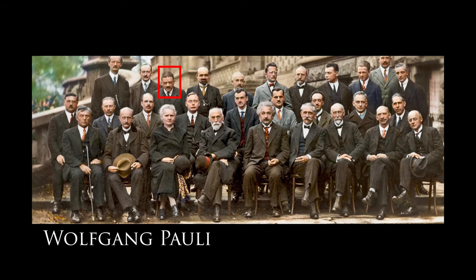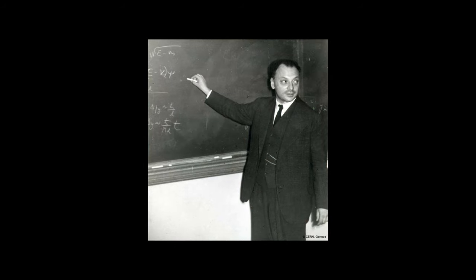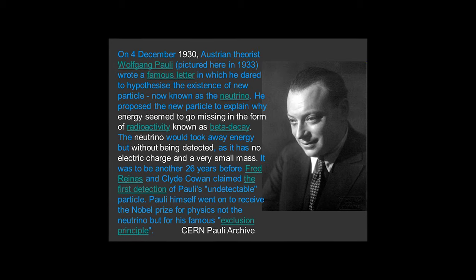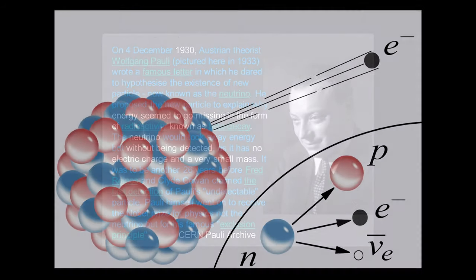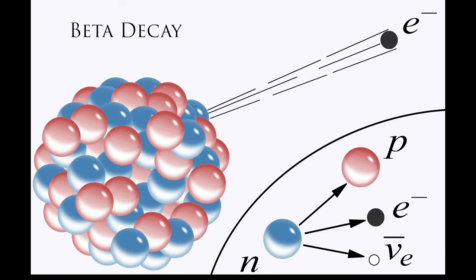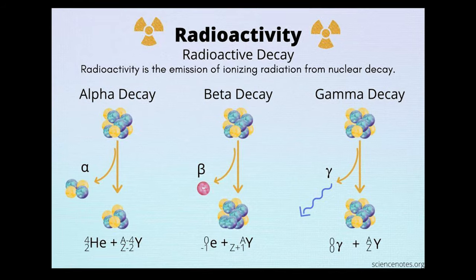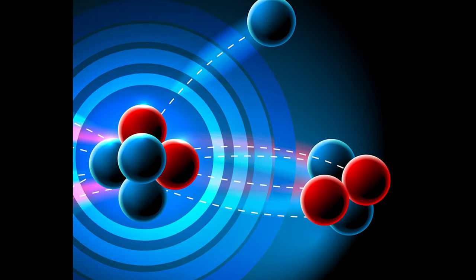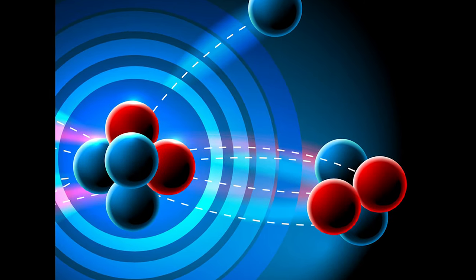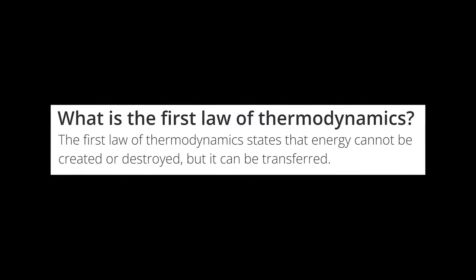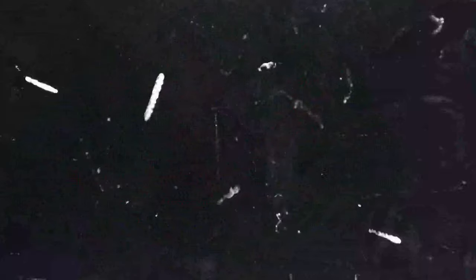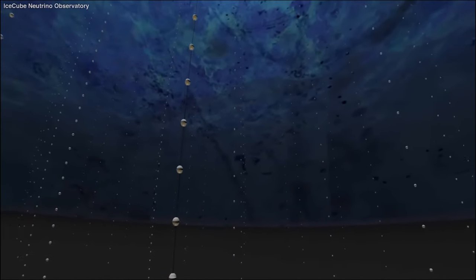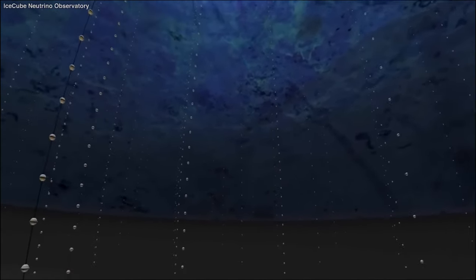In 1930, renowned physicist Wolfgang Pauli was puzzled over a seemingly impossible conundrum. Over multiple experiments, Pauli's contemporaries noticed an accounting error in terms of energy and mass when observing beta decay, a process by which certain radioactive atoms break down. Rather than being emitted as electrons, a small fraction of the decaying atom's energy had apparently vanished. This observation broke the first law of thermodynamics, which states that energy cannot be created or destroyed. So Pauli proposed what he described as a desperate remedy: a new type of small, chargeless, fundamental particle that was emitted alongside the electron and accounted for the missing energy. The idea of the neutrino was born.